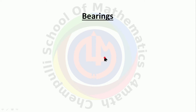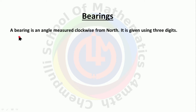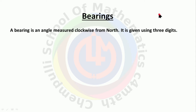Here we are discussing about bearings. First, what is meant by bearing? A bearing is an angle measured clockwise from north. It is given using three digits — for example, if the value is 60, then write your answer as 060.